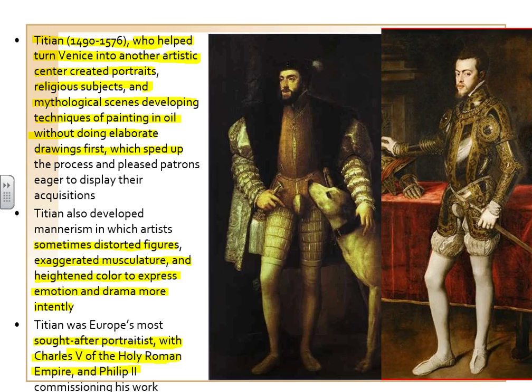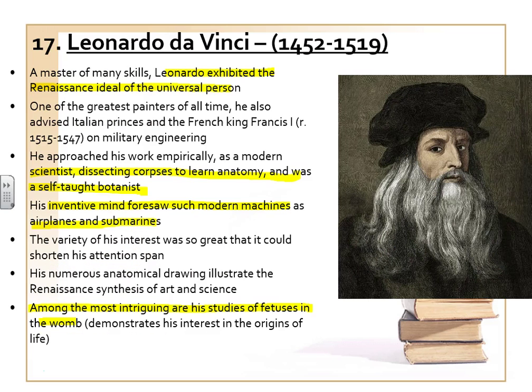Titian, who helped put Venice on the map as far as artwork is concerned, completed a number of portraits for heads of state and their families. He did several paintings for Charles V — shown here on the left — and for Charles's son, Philip II, King of Spain, shown on the right. Titian did a lot of portraits of high-ranking officials.